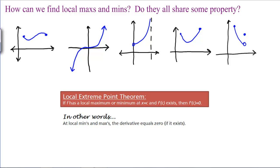So this is the local extreme point theorem. If F has a local maximum or minimum at some point X equals C and the derivative actually exists, then the derivative there has to be 0.